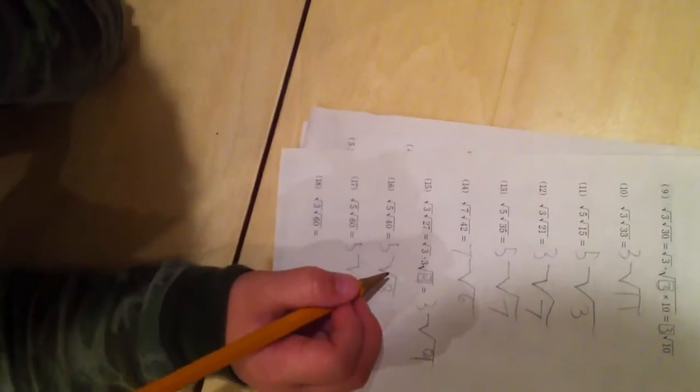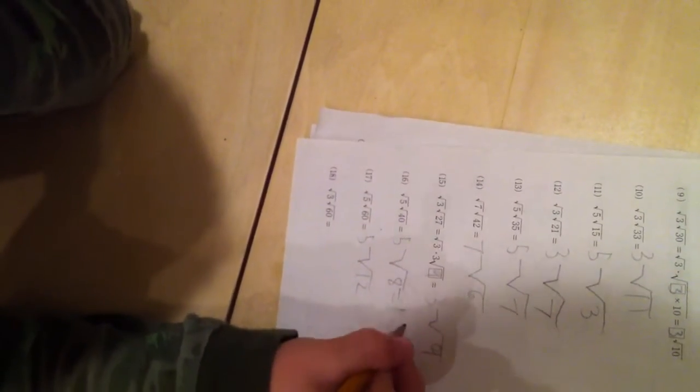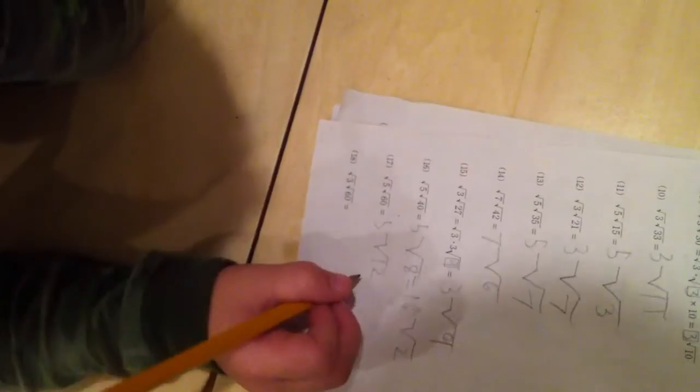4 and 2. 4 and 2 is just 2 times the square root of 2. That's right, 10 times the square root of 2. That's right, very good.